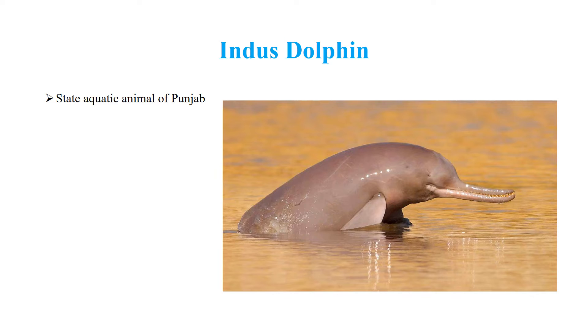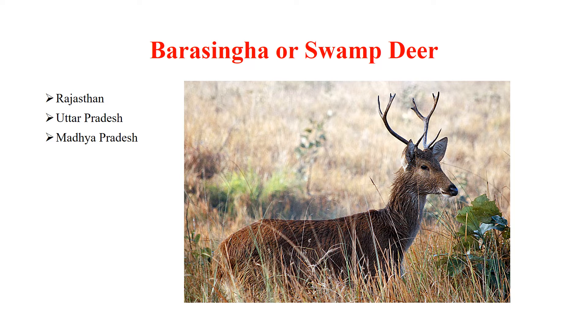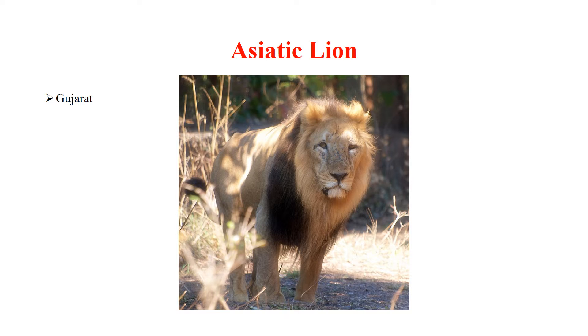Barasingha or Swamp Deer is the state animal of Rajasthan, Uttar Pradesh, and Madhya Pradesh. Asiatic Lion is the state animal of Gujarat.